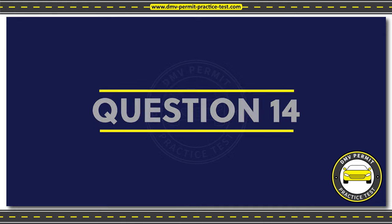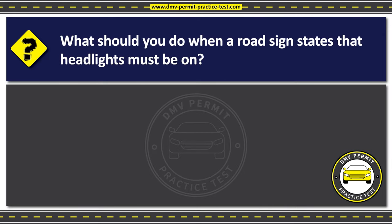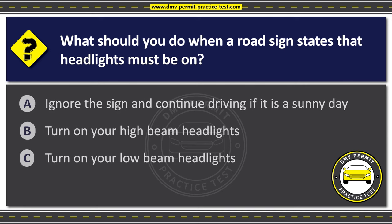Question 14. What should you do when a road sign states that headlights must be on? Option A: Ignore the sign and continue driving if it is a sunny day. Option B: Turn on your high beam headlights. Option C: Turn on your low beam headlights. The correct answer is Option C: Turn on your low beam headlights. Low beam headlights provide sufficient lighting for most driving conditions and are appropriate for normal traffic situations. High beams can temporarily blind other drivers, particularly in situations with heavy traffic.